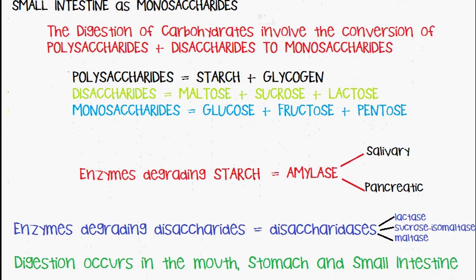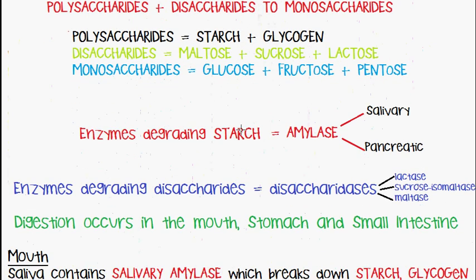The enzyme which degrades starch and glycogen is known as amylase. Amylase basically degrades the 1,4 glycosidic linkages found in polysaccharides. There are two types of amylase: salivary amylase and pancreatic amylase. The enzymes which degrade the disaccharides are disaccharidases, known as lactase, sucrase, isomaltase and maltase.